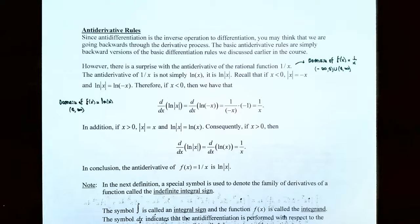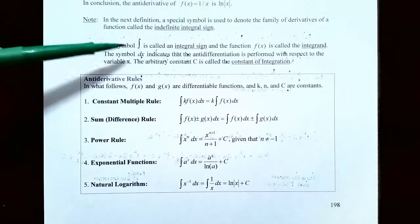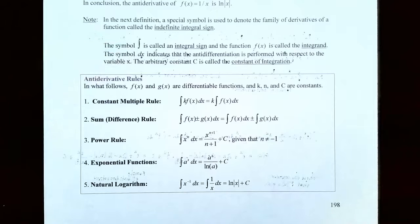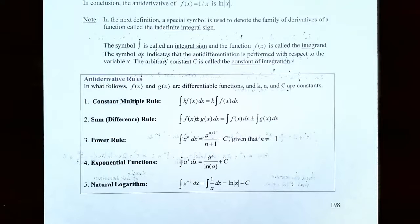Don't forget about the absolute value around the argument of the natural logarithm function when you find the antiderivative. The indefinite integral sign — this elongated S — is called the integral sign. For a function f(x), that's called the integrand, and the symbol dx indicates antidifferentiation is performed with respect to the variable x. The arbitrary constant C is called the constant of integration.